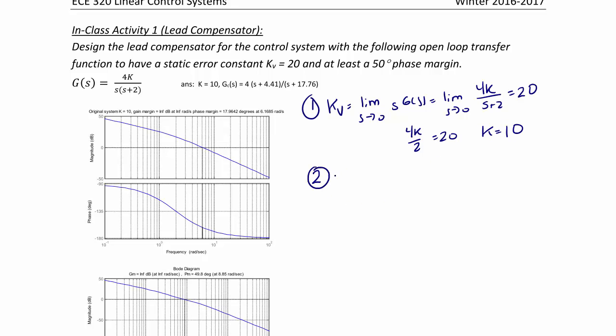Step 2 is to create the Bode plot for k equal 10. Here we have the Bode plot we've created using a gain of k equal 10. Step 3 is for us to find the gain crossover frequency and the uncompensated phase margin.